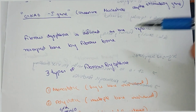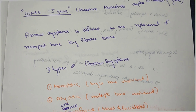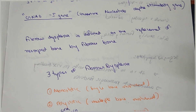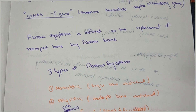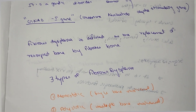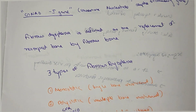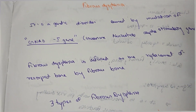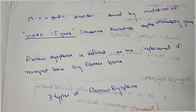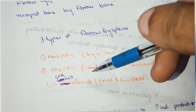Fibrous dysplasia is defined as a replacement of the resorbed bone by fibrous bone. Osteoclast cells resorb bone, while osteoblast cells form bone. So fibrous dysplasia involves replacement of the resorbed bone by fibrous tissue.